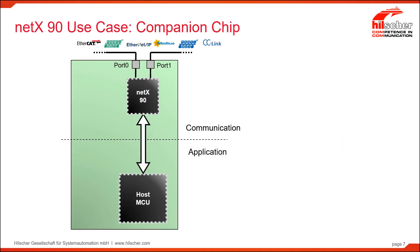Next, we're going to consider the first companion chip use case. As we noted, the older NetX chips were companion chips — network processors intended to be used with a host processor. In this case, the NetX 90 is using only the communication side of the part. It is connected to a host processor provided by the developer through an SPI bus or through an address-data bus to externalize the internal dual-port memory. The interactions between the host processor and the communication side of the NetX 90 happen over this internal dual-port memory.